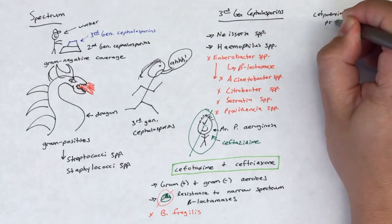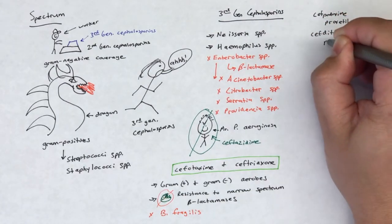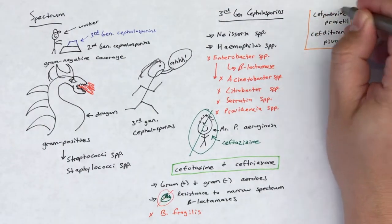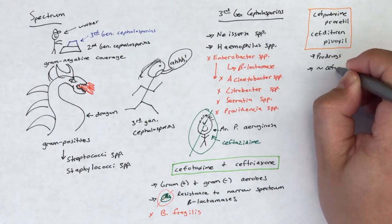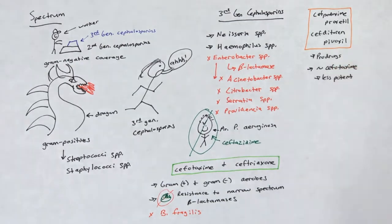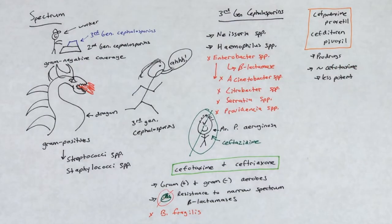Cefpodoxime proxetil and ceftaroline pivoxil are prodrugs that are hydrolyzed to the active forms of cefpodoxime and ceftaroline respectively. These drugs have similar but less potent coverage versus ceftotaxime.